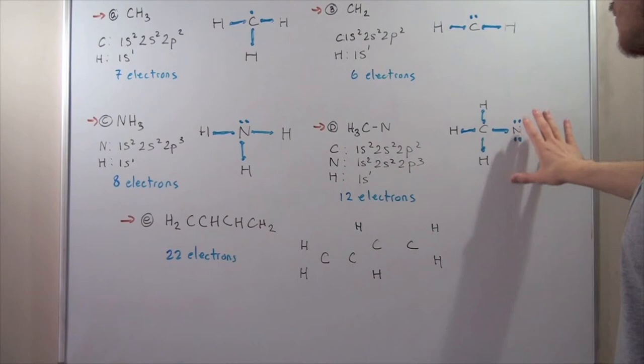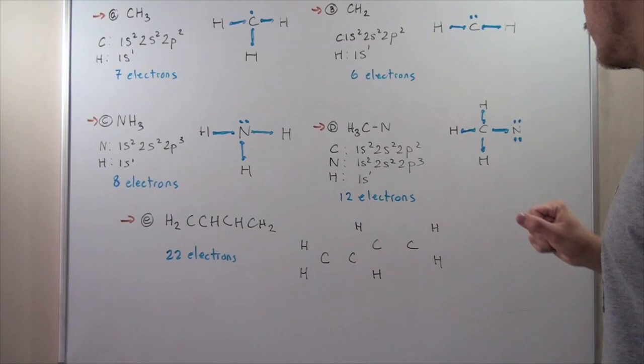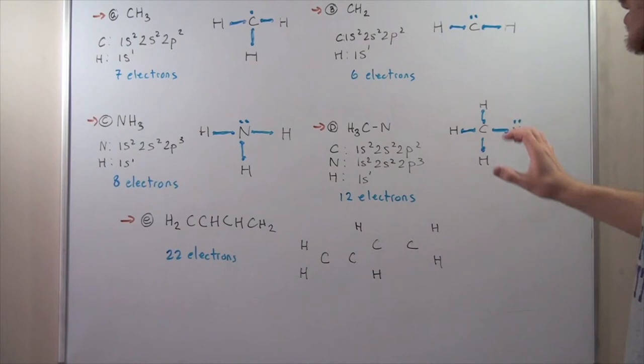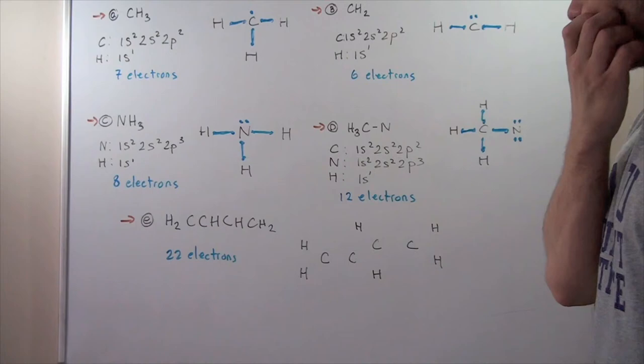Counting all electrons confirms we have 12 total, satisfying our neutral condition. So we're done with part D.